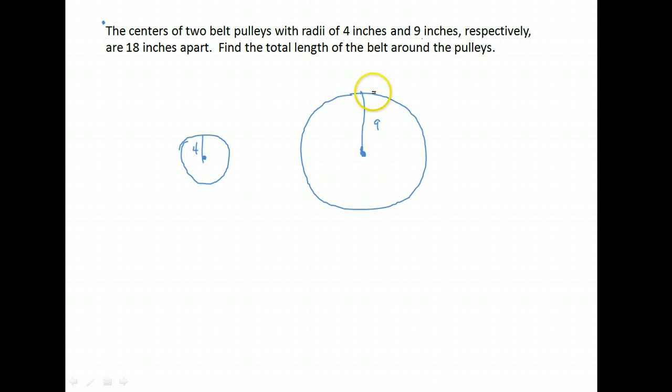Now these two have a belt that goes around them. There's a belt that runs from one circle to the other, and around all the way around. We want to know what's the length of that belt.